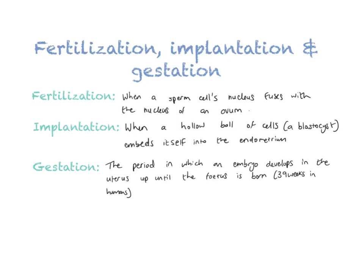Yesterday we finished off by looking at the menstrual cycle and we looked at how ovulation occurs on day 14 of a woman's menstrual cycle. That's an important day because the ovum is only alive for one day, so the sperm have 24 hours to fertilize that egg. The sperm cell comes into contact with the egg, and the acrosome — a little pocket of enzymes at the head of the sperm — dissolves the membrane of the ovum, allowing the sperm cell's nucleus to enter and fuse with the nucleus of the ovum. You get a haploid nucleus from the sperm fusing with a haploid nucleus from the egg, making a diploid zygote.